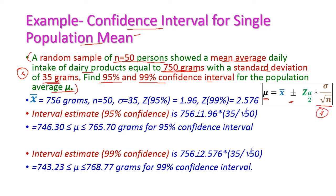We know the formula: population mean mu equals x-bar plus or minus z times sigma divided by root n. The given values are x-bar equal to 750 grams, n equal to 50, sigma equal to 35. From the z-table, z for 95 percent is 1.96 and for 99 percent is 2.576. For the 95 percent confidence interval, we substitute: 750 plus or minus 1.96 times 35 divided by root 50.